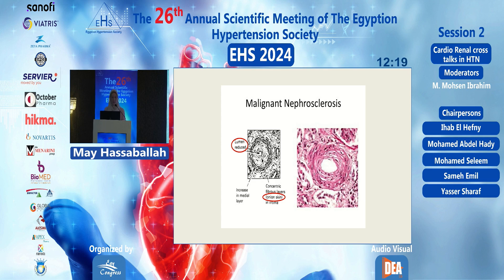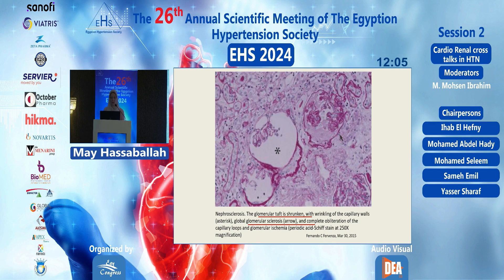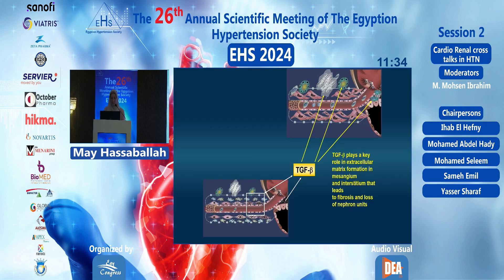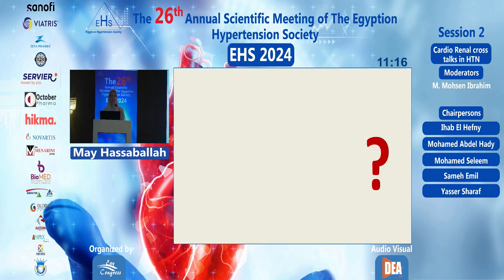In malignant nephrosclerosis, there is intimal hyperplasia and hypertrophy, reduced lumen, onion-skin appearance, fibrinoid necrosis in arterioles, and thrombosis ending with ischemia — resulting in a shrunken glomerular tuft and glomerulosclerosis. Functioning nephrons adapt by increasing pressures and flows, stimulating angiotensin II, which causes differential vasoconstriction, increases intraglomerular pressure, and worsens proteinuria. Angiotensin II also stimulates TGF-beta, promoting extracellular matrix formation, fibrosis, and ultimately FSGS and end-stage renal disease.